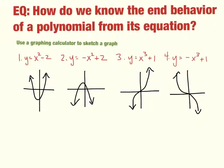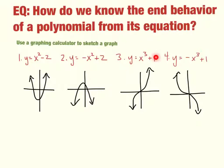So today we're talking about end behavior. End behavior is how the graph ends — those are these arrows. x squared minus 2: these arrows both end going in an upward direction. Negative x squared plus 2: they both end going down. x cubed: we have one going down and one going up, so from left to right it's going down then up. And negative x cubed starts on the left going up and ends going down.